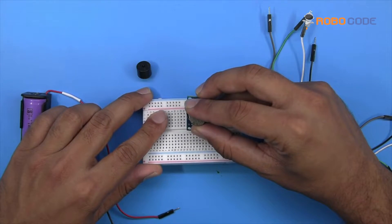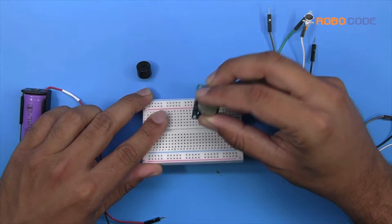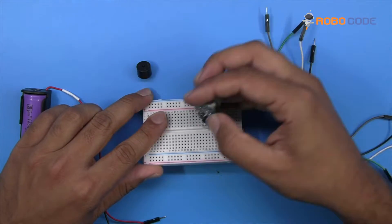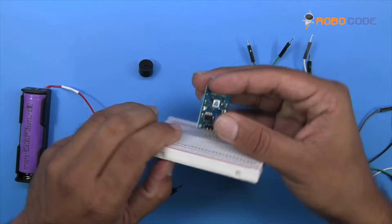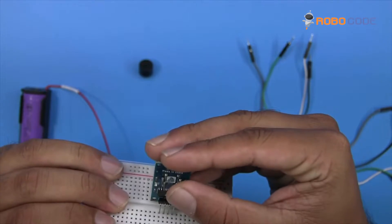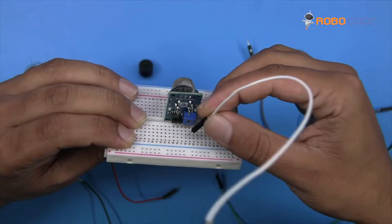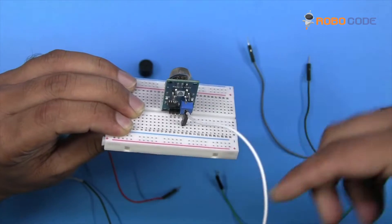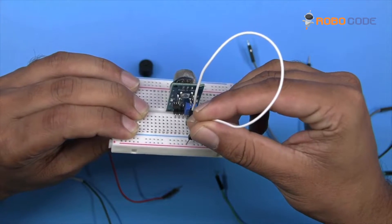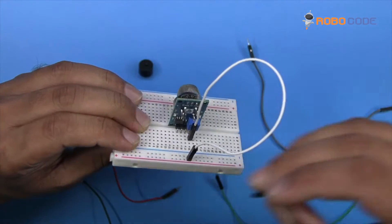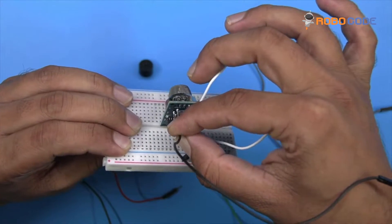Take the breadboard and the MQ2 sensor and insert, as you can see in this video. The MQ2 sensor has four pins. Take the white wire and insert it right next to the fourth pin of the MQ2 sensor and the other side to the last row of the breadboard.